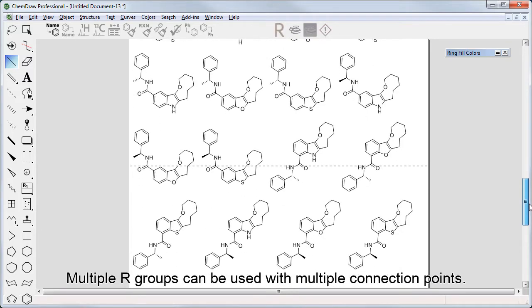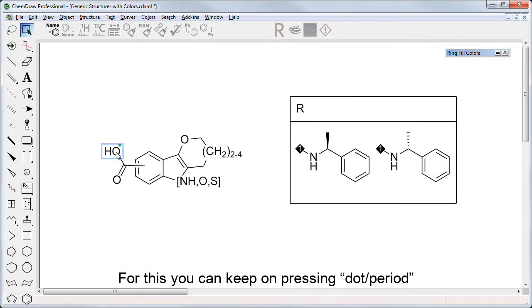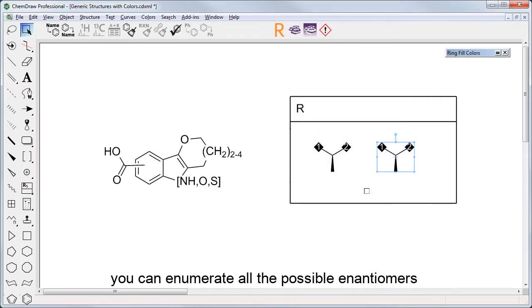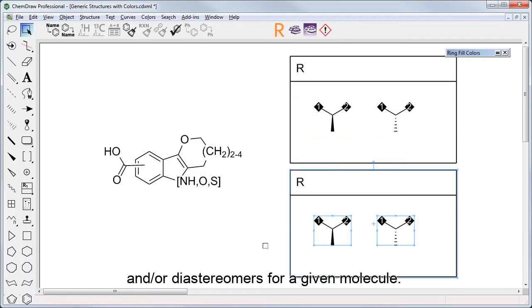Multiple R groups can be used with multiple connection points. For this, you can keep on pressing dot or period over a second atom, and this way you can enumerate all the possible enantiomers and/or diastereomers for a given molecule.